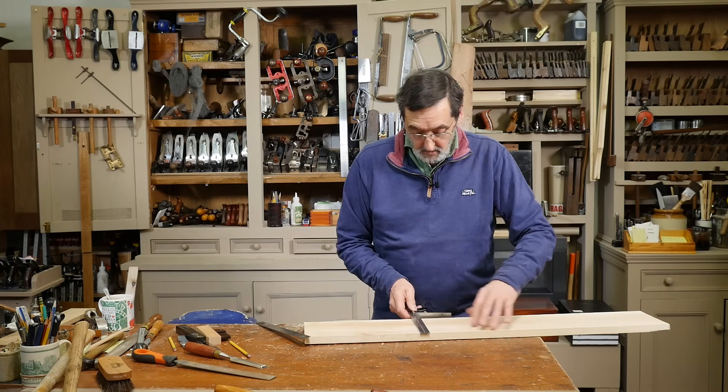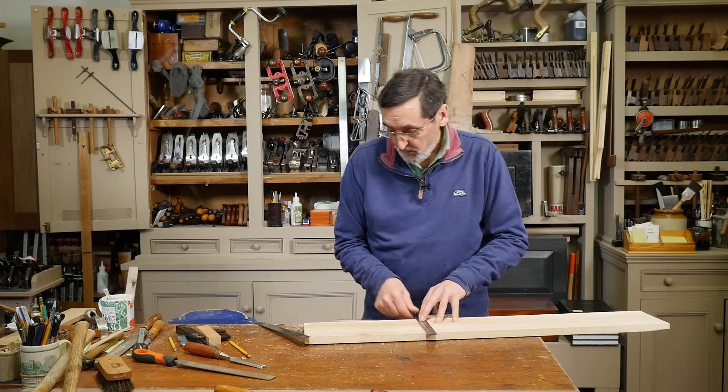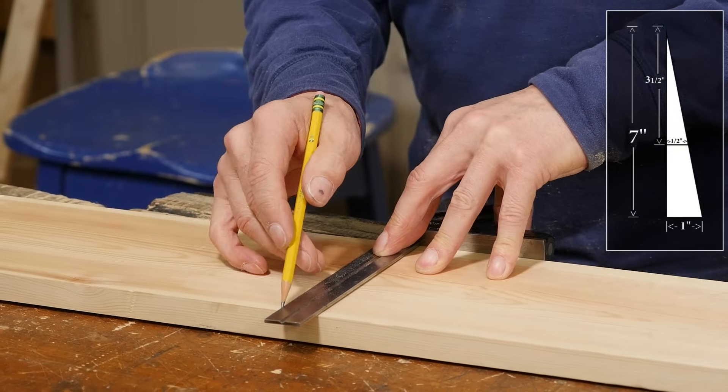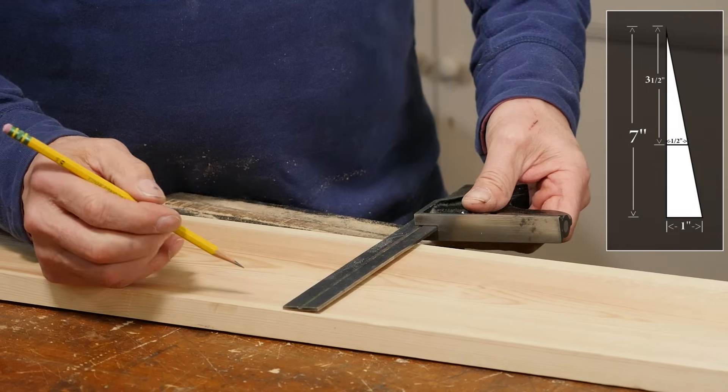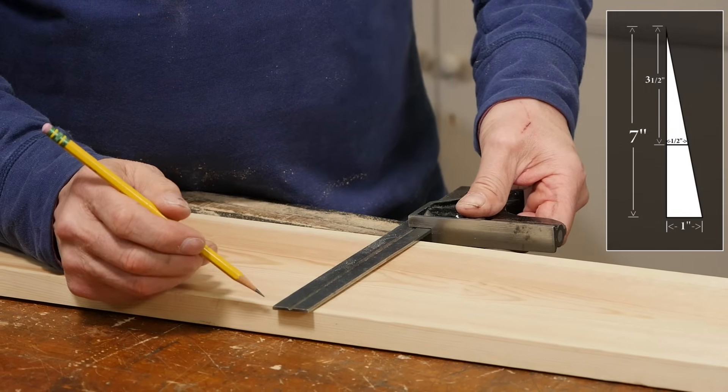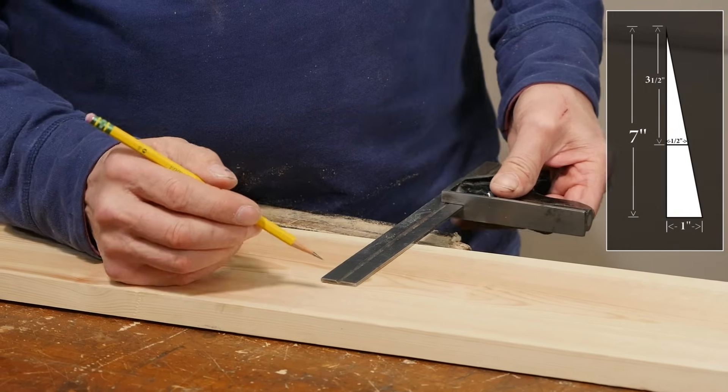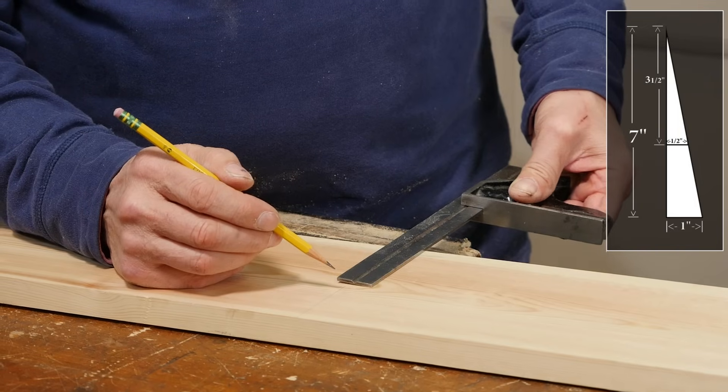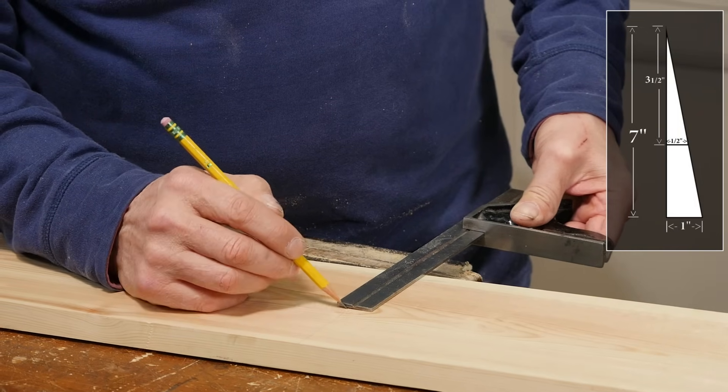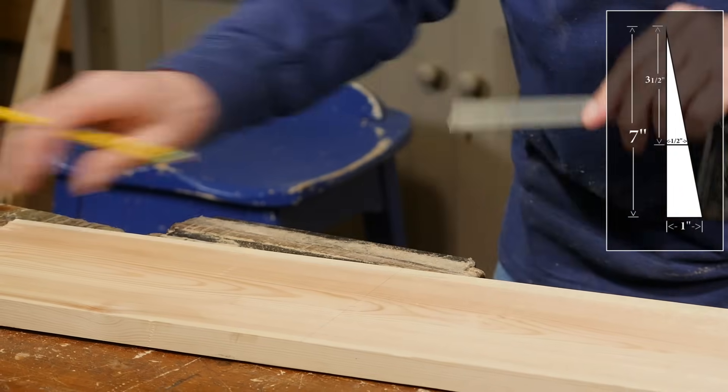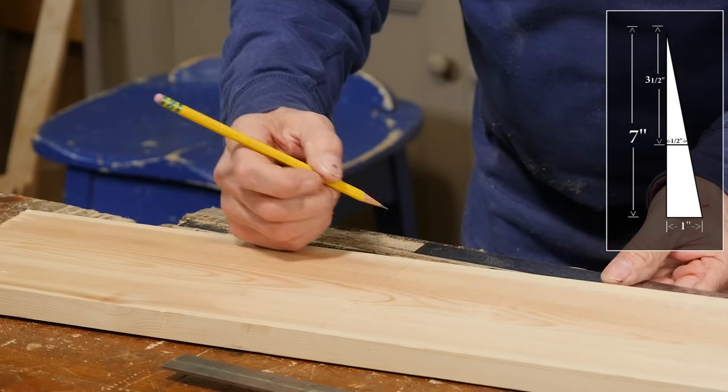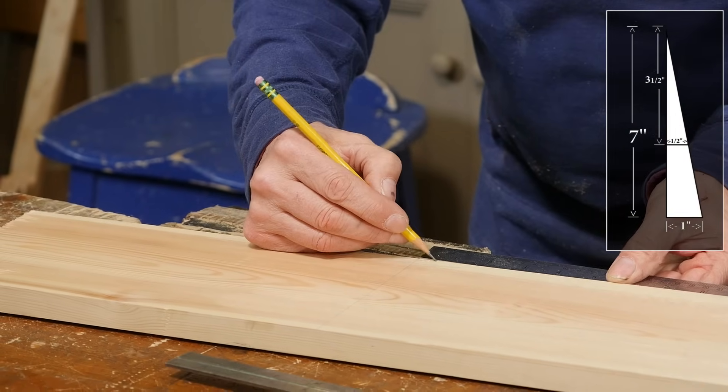What I'm going to do, this board is over seven inches wide, square a line across the edge here. Come up seven inches. This won't do seven, so I'm going to come up three and a half. That's going to be increments of half inch.